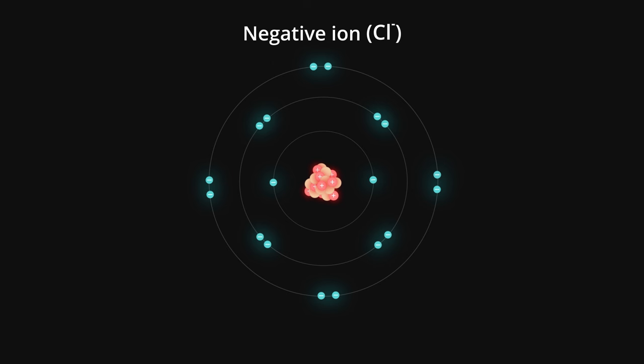As an ion, it's not reactive at all. Now that it has eight electrons in its outer shell, it doesn't need to steal any more electrons. Some atoms change their name slightly when forming ions. The ion of chlorine is called a chloride ion.